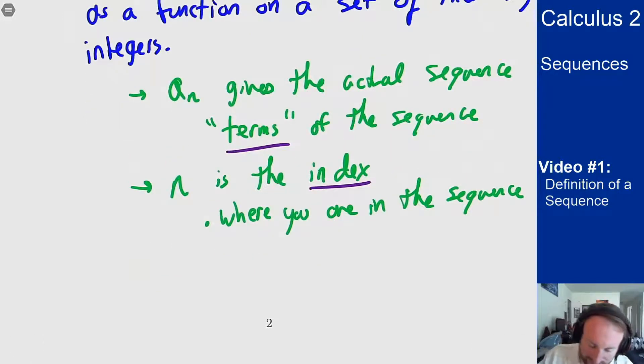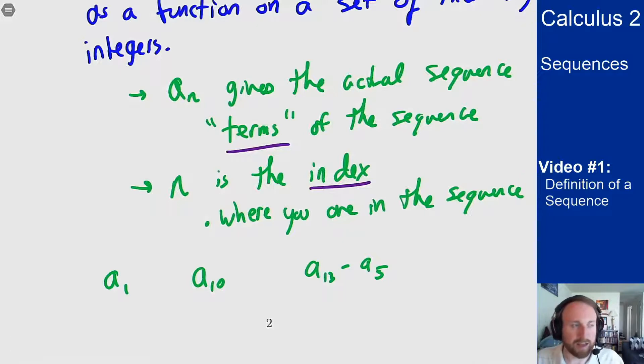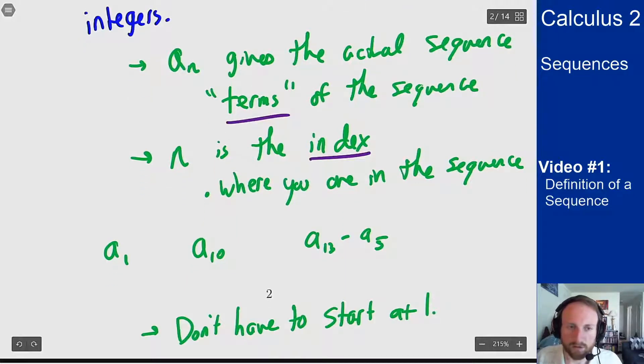You could write a1 to be the term at index 1 in the sequence. You could write a10 to be the term at index 10, or a13 minus a5 to be the difference between the 13th and 5th terms. As one other note, they don't have to start at 1, they can start at whatever number they want.